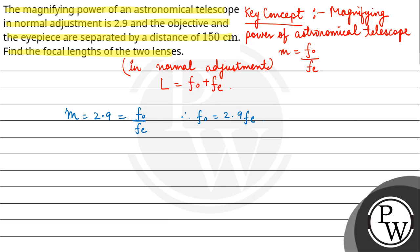Now, given is 150, the length of the tube, the distance between objective and eyepiece. That is equal to F_o plus F_e. Substituting F_o, we get 2.9 F_e plus F_e, so 3.9 F_e is equal to 150. Therefore, F_e is equal to 150 upon 3.9, which is equal to 38.5 centimeters.